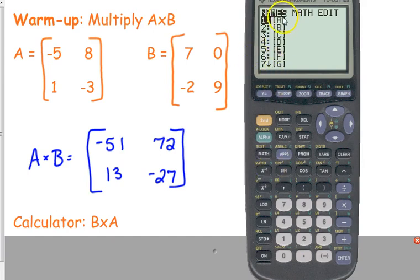Now, you should see a list of letters, but we need to go over to the edit column, the third column over. Use the right arrow to go to the third column over because we have to put the matrices in there. We have to put their entries in there. So press enter.